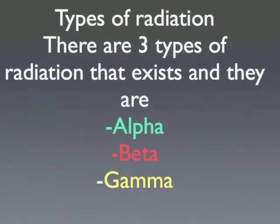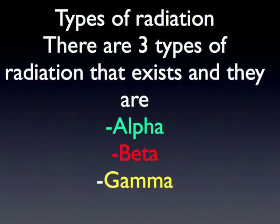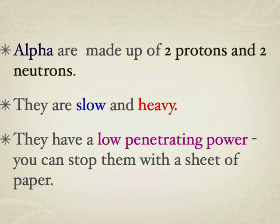There are three types of radiation: alpha, beta, and gamma. Alpha particles are made up of two protons and two neutrons. They are slow and heavy, and have a low penetrating power. You can stop them with a sheet of paper.